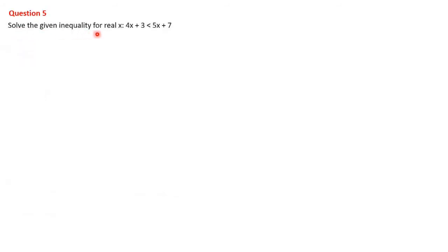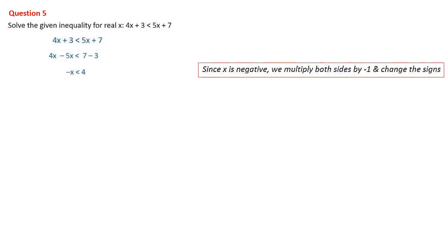Question 5: Solve 4x + 3 < 5x + 7 for real x. Bring like terms to one side: 4x - 5x < 7 - 3, giving -x < 4. Since x has a negative sign, multiply both sides by -1 and change the inequality symbol: x > -4. Since x is real, the solution is the open interval x ∈ (-4, ∞).